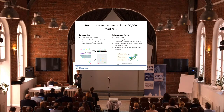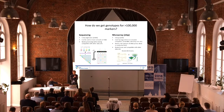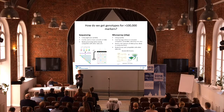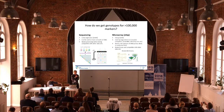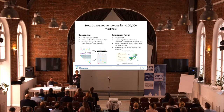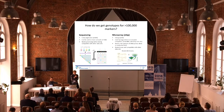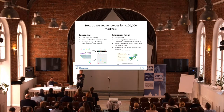Whole genome sequencing is still fairly expensive — roughly about $2,000 per genome. The good thing with whole genome sequencing is that we can use it on trace amounts of DNA, so if we have a very small amount of DNA we can usually get a lot of information. The problem with the sequencing output is that it needs a bit of processing before we can compare it to the reference data sets.